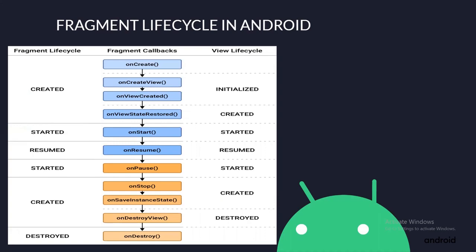For example, you might display the device location on the screen using a lifecycle-aware component. The component could automatically start listening when the Fragment becomes active and stop when the Fragment moves into an inactive state. As an alternative to using a Lifecycle observer, the Fragment class includes callback methods that correspond to each of the changes in a Fragment Life Cycle. This includes OnCreate, OnStart, OnResume, OnPause, OnStop, and OnDestroy.